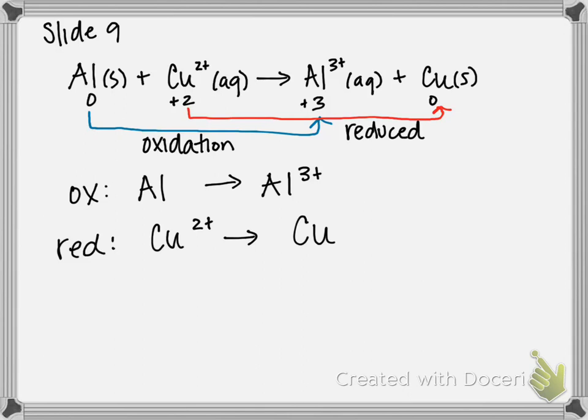Step 4 is to add electrons. A redox reaction is a transfer of electrons between something that's reduced and something that's oxidized, so we have to incorporate electrons into our half reactions. They won't be present in the overall reaction at the end, but for the half reactions we need to include them.